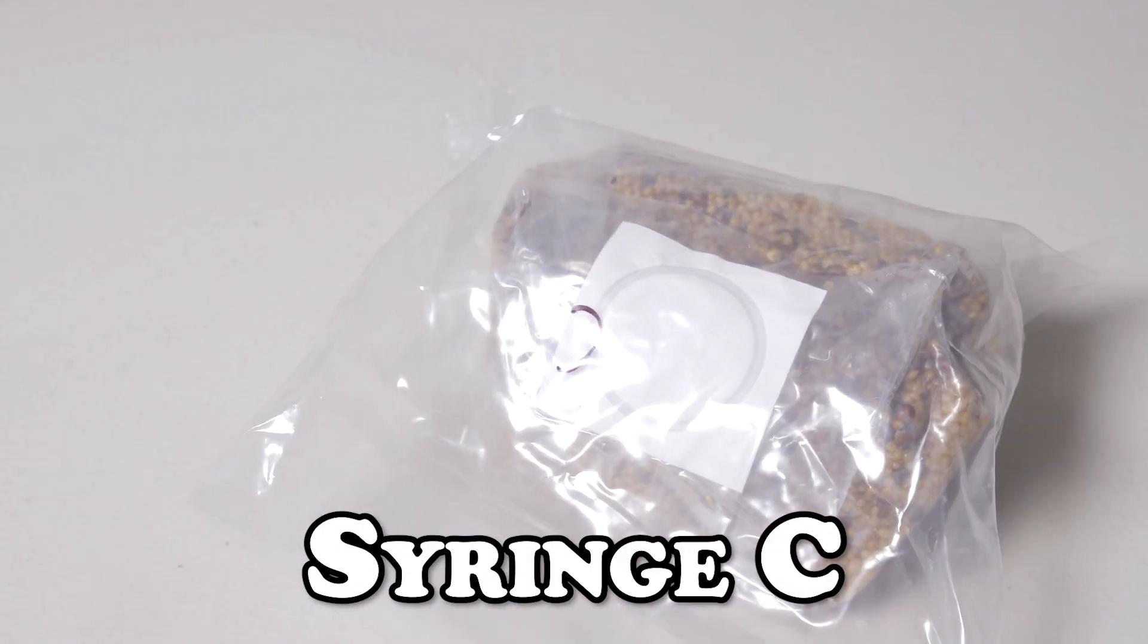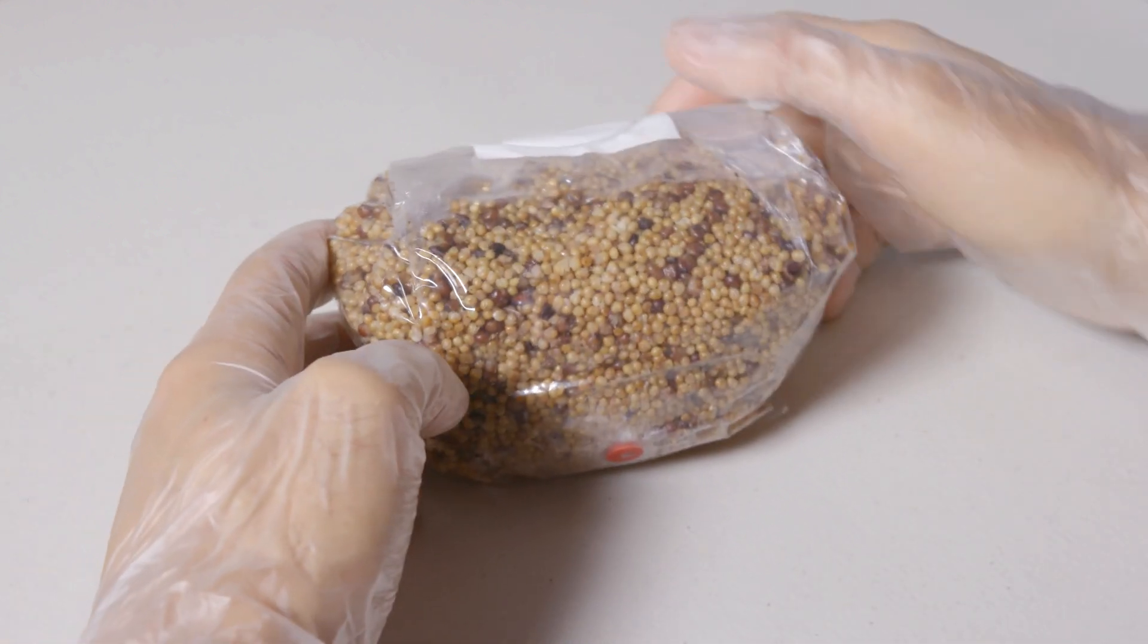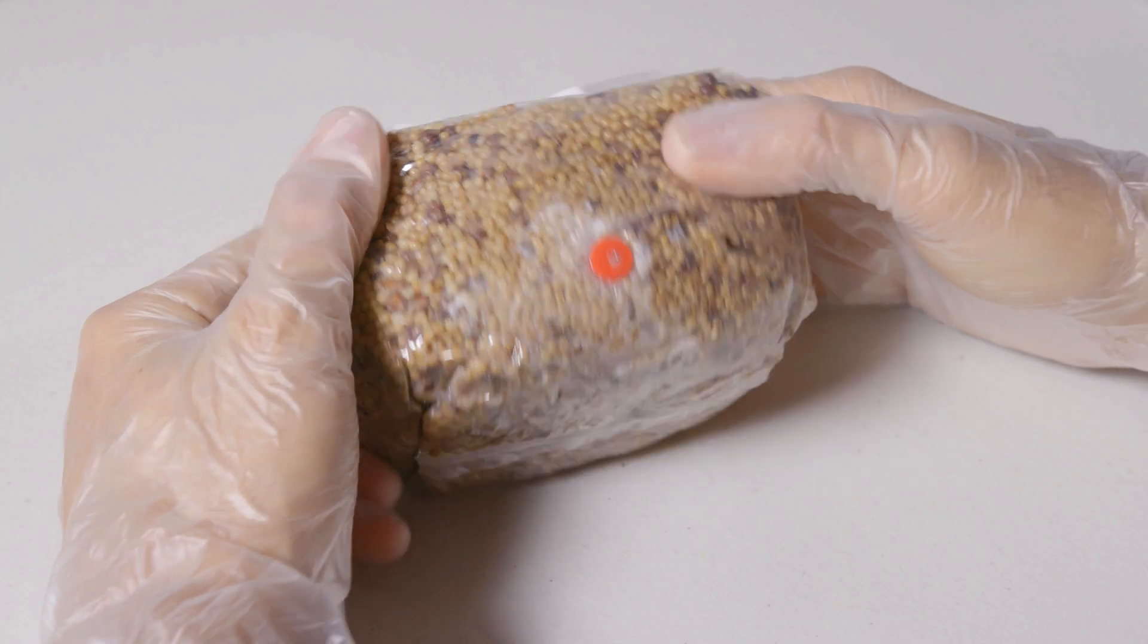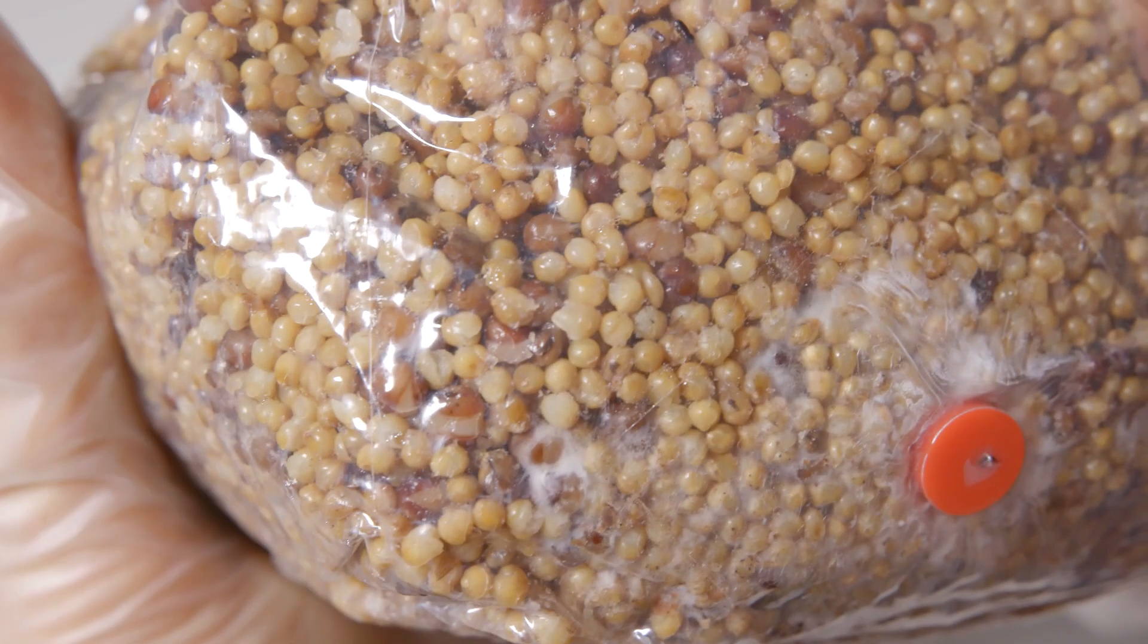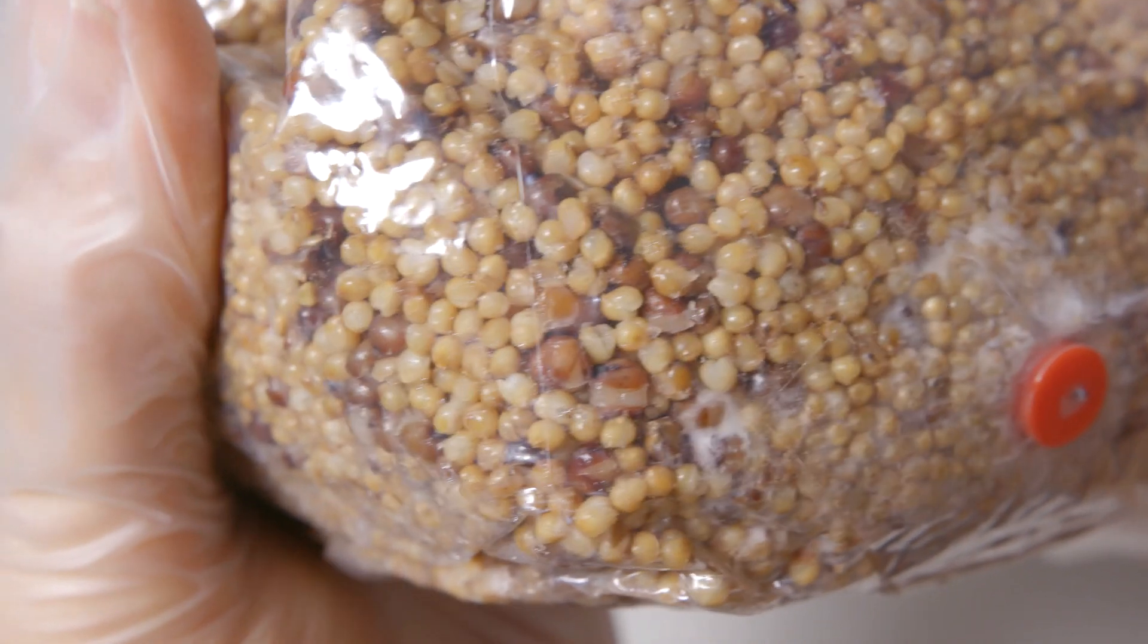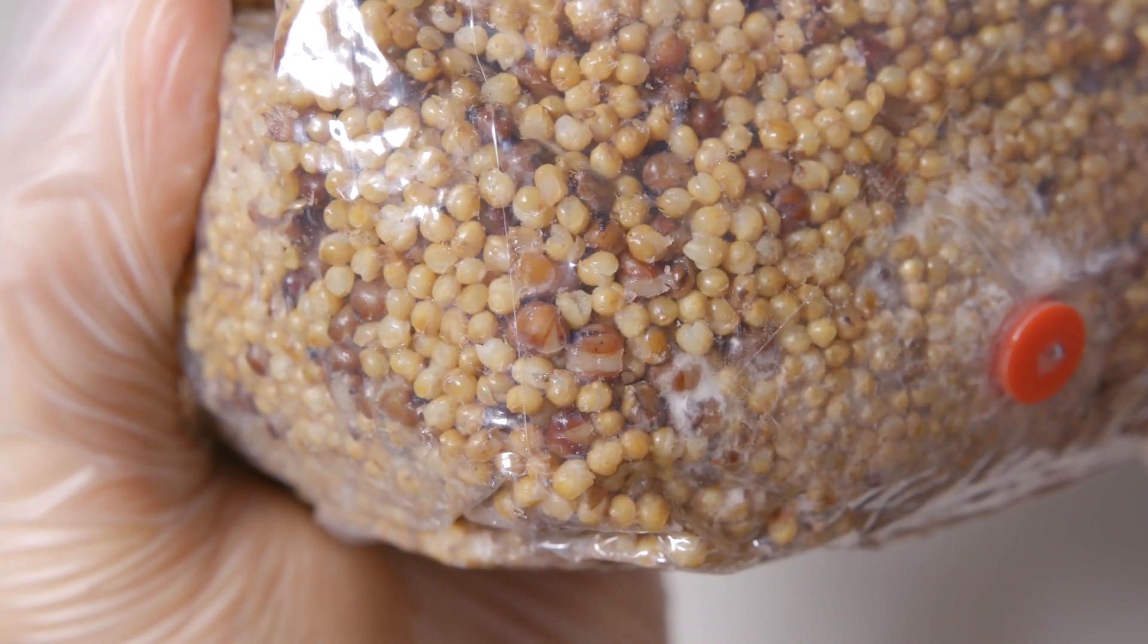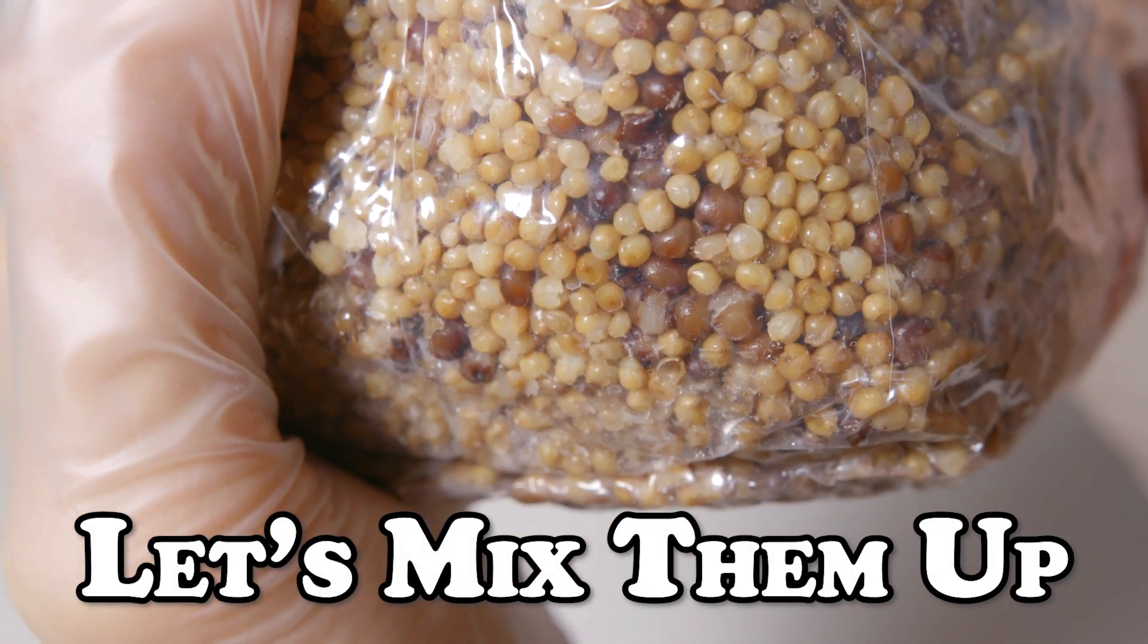Here's our last bag, syringe C. We do have a little activity by the inoculation port, however you'll notice that the mycelium is also a bit wispy instead of the nice white strands which we'd like to see. As we take a closer look we'll notice that a bit of condensation is forming around the grains, which is normal. However, the grains themselves also have that glossy sheen indicating the beginning stages of bacterial breakdown. We'll take our three bags, mix them up, place them back into incubation and check up on them in two weeks.